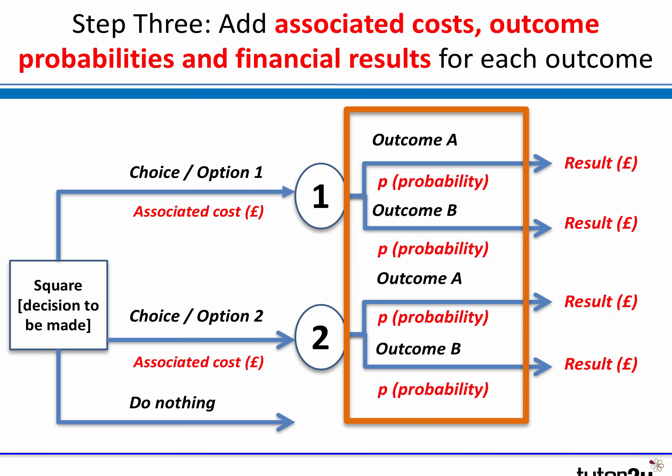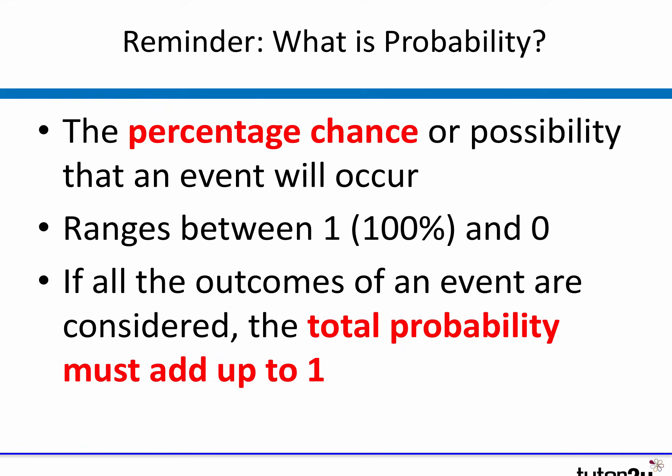Let's spend a little time reminding you about probabilities. If you did GCSE maths, it may come as a bit of a shock to think you might actually use that in an A-level business exam, but it's true. Probability is all about percentages — the percentage chance that something will occur or not. It should range between one, which is certainty, and zero, which is no chance. In your decision tree, the probabilities of all outcomes when added together should equal one.